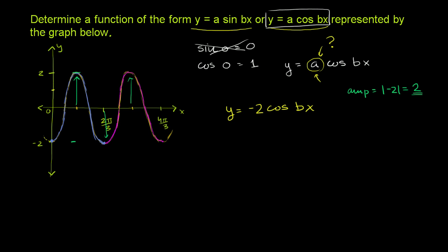So based on that, what is the period? Well, it's the length that you need to go in x to complete one cycle. So that length right over there, you see, is 2 pi over 3. So the period is 2 pi over 3.